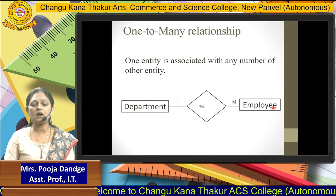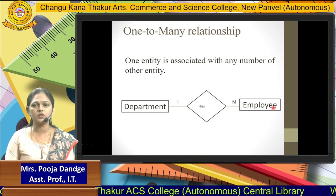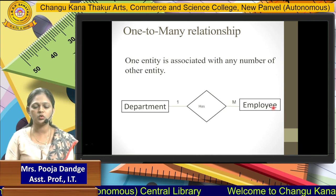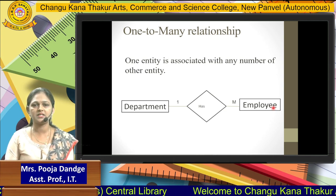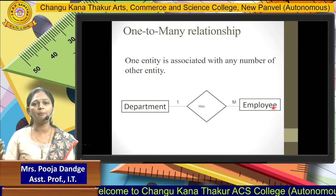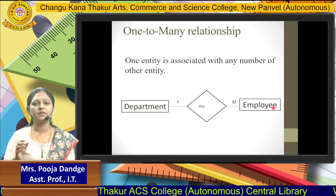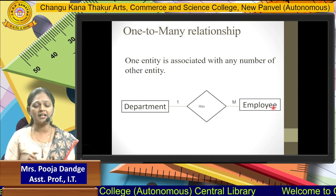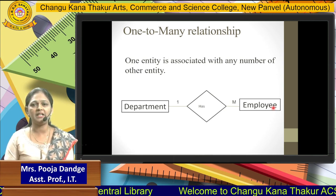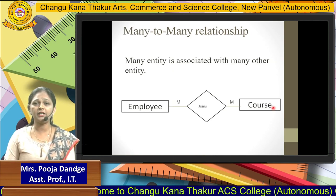The next type is the one-to-many relationship. One-to-many relationship means one entity is associated with any number of other entities. For example, consider a department as one entity — inside that department there are a number of employees, say 10 or 20 employees. So the department is one but the employees are many. That means a one-to-many relationship is established here.